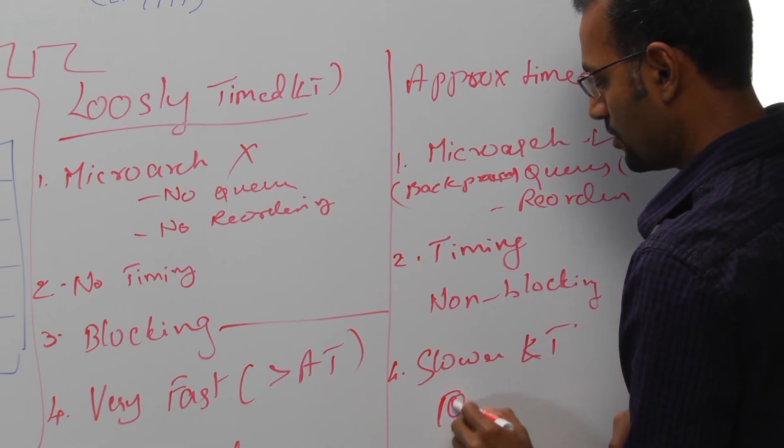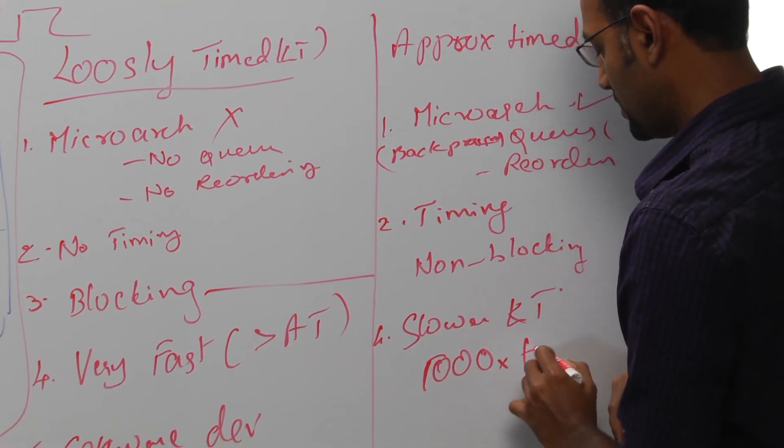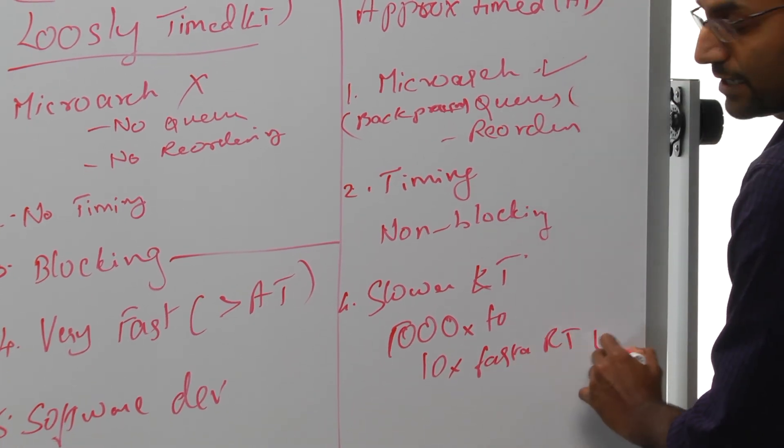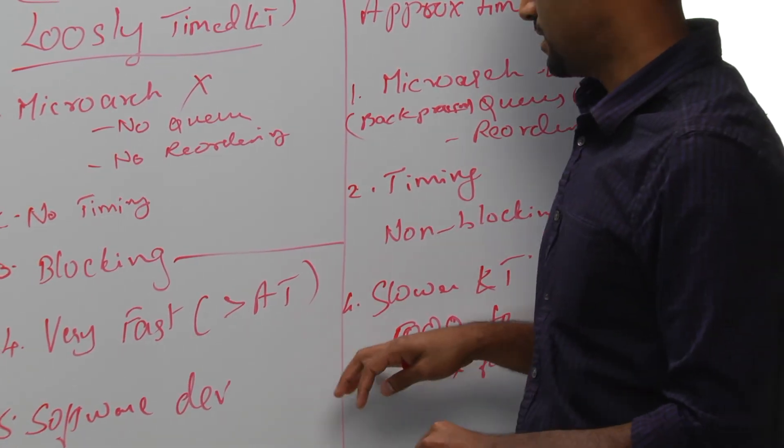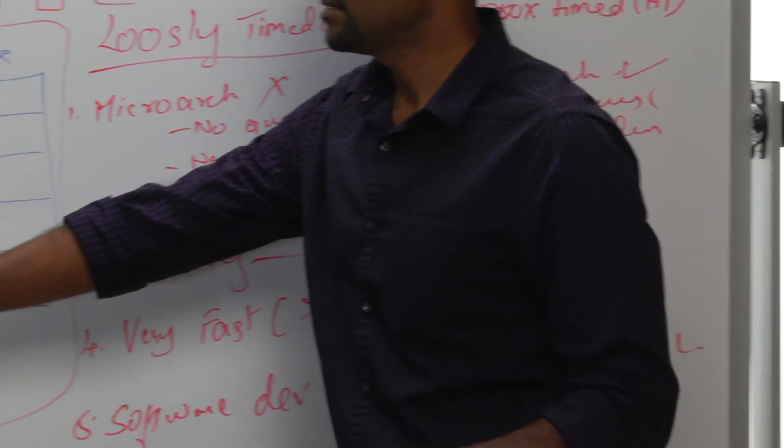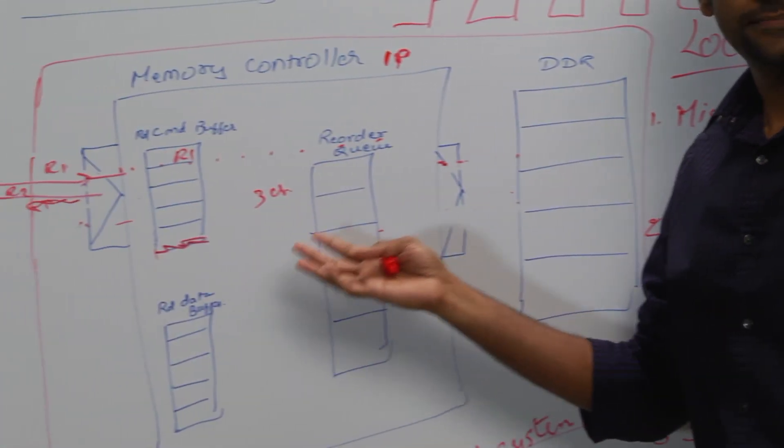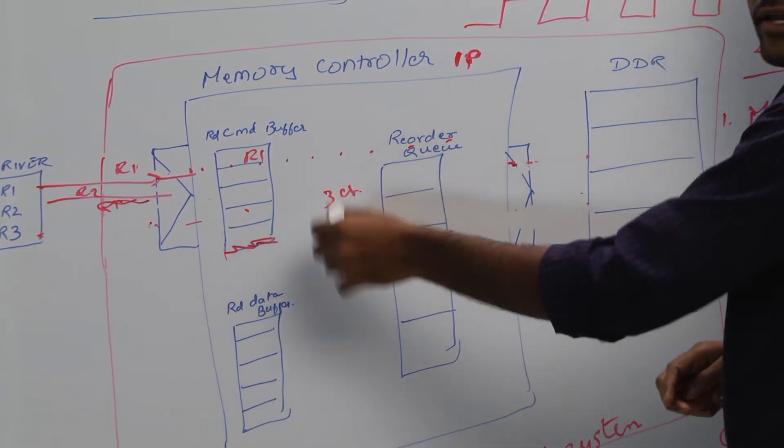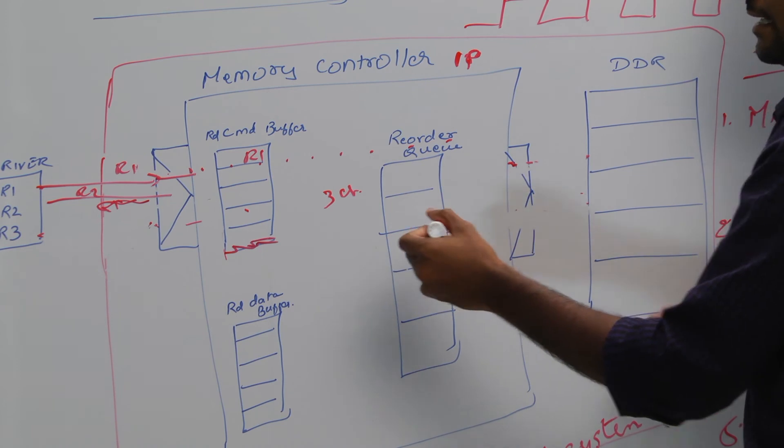It's slower than LT but it's still about 1000 to 10,000 times faster than RTL. It's slower than LT clearly because not just because it's modeling all the components in it, but also because each module is spawned as a separate thread internally.